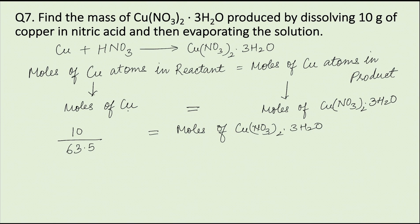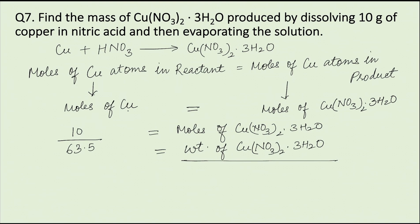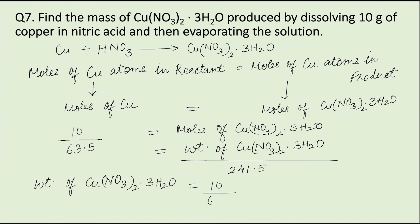Moles of copper nitrate trihydrate can also be written as weight of copper nitrate trihydrate divided by its molecular weight, which is 241.5. Therefore, weight of copper nitrate trihydrate equals (10 ÷ 63.5) × 241.5, which equals 38 grams.